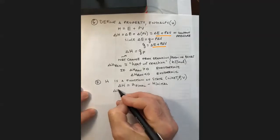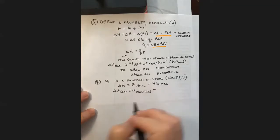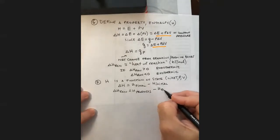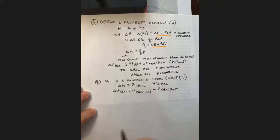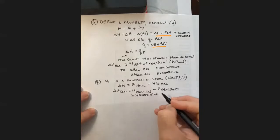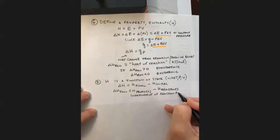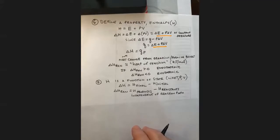For the heat of a reaction, the final state is the products and the initial state is the reactants. So the change in enthalpy is independent of the path of the reaction — the mechanism. It doesn't matter whether the reaction takes place in a single step or ten steps; as long as we have the final and initial conditions, we can calculate ΔH.